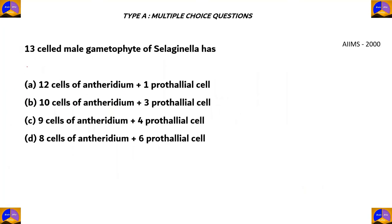The next question: the 13-celled male gametophyte of Selaginella has — A. 12 cells of antheridium plus 1 prothallial cell, B. 10 cells of antheridium plus 3 prothallial cells, C. 9 cells of antheridium plus 4 prothallial cells, and D. 8 cells of antheridium plus 6 prothallial cells.